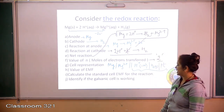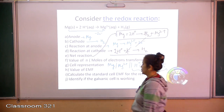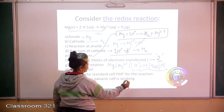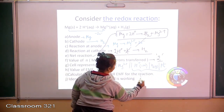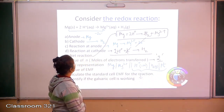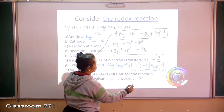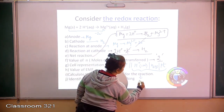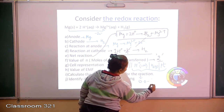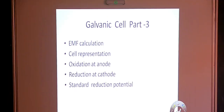To calculate the standard EMF of the cell and identify whether the galvanic cell is working, the formula is E°cathode minus E°anode. The cathode is hydrogen so E° = 0.0, minus the E° of magnesium — you look up the table for the value of magnesium to complete the calculation.